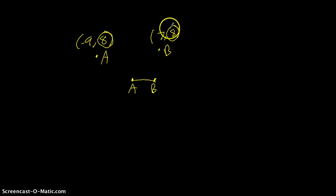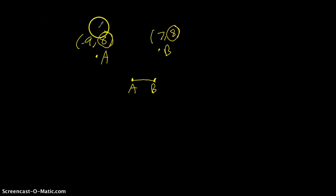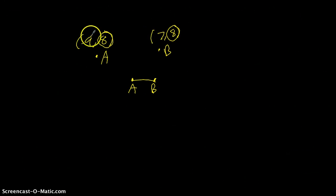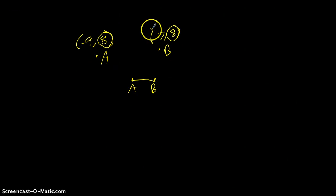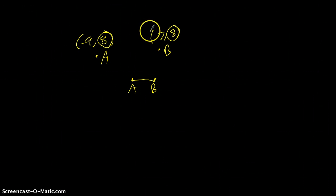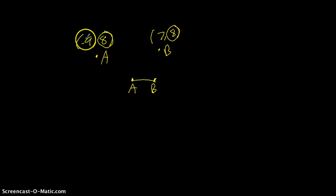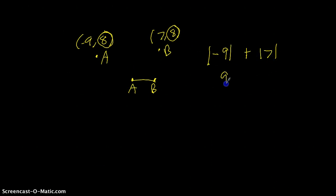Because we have positive-positive, we know this will be in quadrant 1, and because we have negative-positive, we know this will be quadrant 2. Because we pass from one quadrant to another, when we find the length of the line segment, we add the absolute values of the x-coordinates: the absolute value of negative 9 plus the absolute value of positive 7 is 9 plus 7, which equals 16.